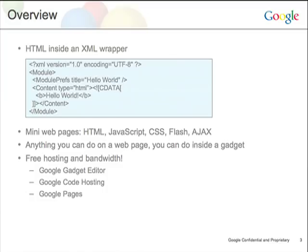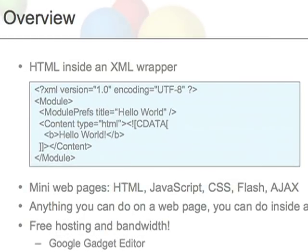If you look at the XML spec we have here, this is an example of the simplest type of gadget you'll see. Everyone knows we start with Hello World examples. You see a parent root element called module, underneath there a module prefs tag, and underneath there a content tag as well. I'll go into more detail about what each section means in the XML. But basically, in about six or seven lines of XML, you have a gadget running right there.